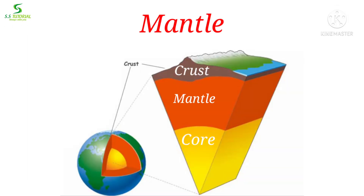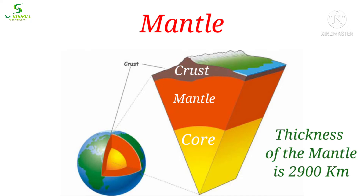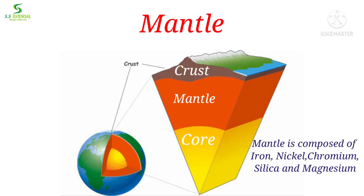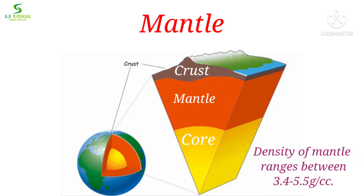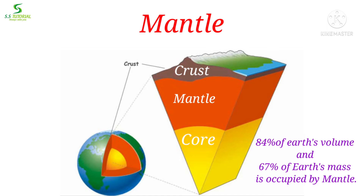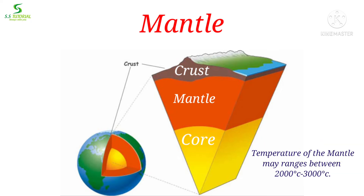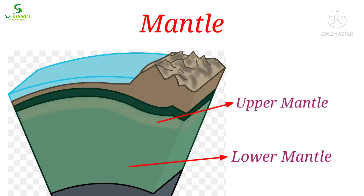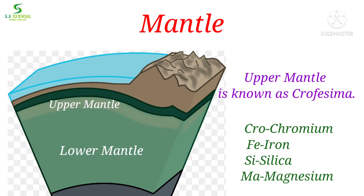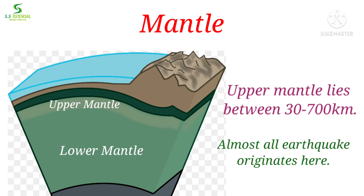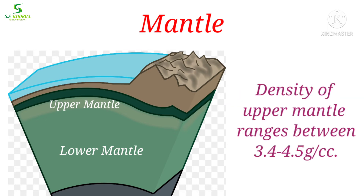Let's know about the mantle. The portion between the crust and core is known as the mantle. The thickness of this layer is about 2,900 km. The mantle is composed of elements like iron, magnesium, chromium, nickel, and so on. Mean density is 3.4 to 5.5 g per cubic centimetre. Nearly 84% of the earth's volume and almost 67% of the earth's mass is occupied by the mantle. Temperature may range between 2,000 to 3,000 degrees centigrade. The mantle also divides into two sub-layers: upper mantle and lower mantle. The upper mantle, also known as Crofesima, is composed of chromium, iron, silica, and magnesium. It lies between 30 km to 700 km depth, and almost all earthquakes originate here. Mean density of this layer is about 3.4 to 4.5 g per cubic centimetre.